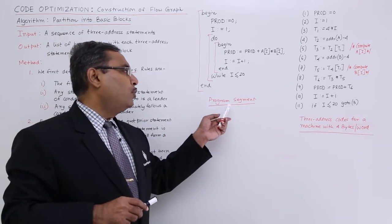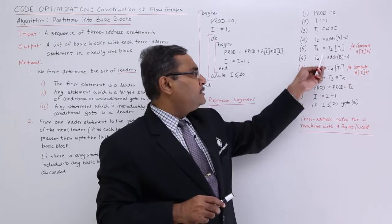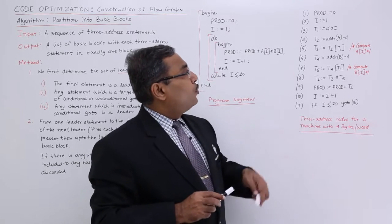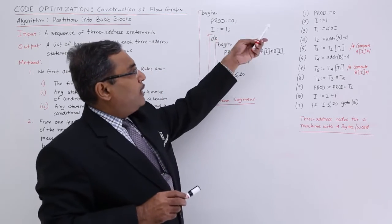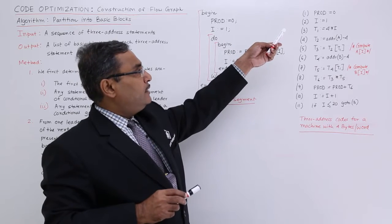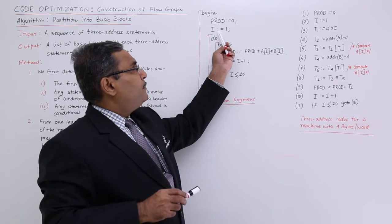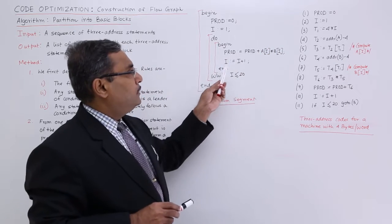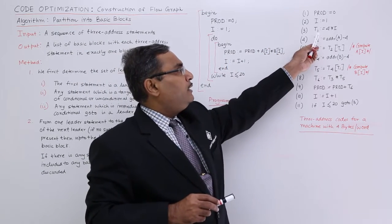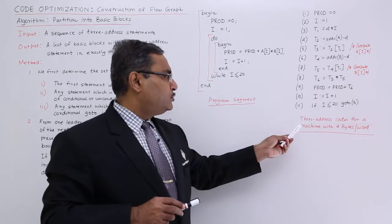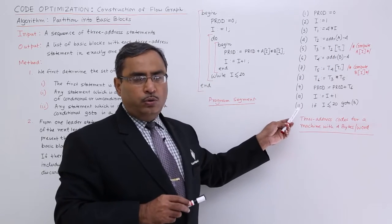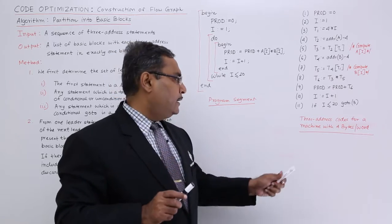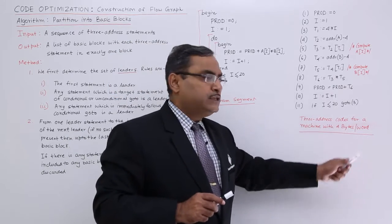This is a very simple sample program segment. Now, the respective three-address code has been written. Product is equal to 0, and i is equal to 1 — these are written as three-address statements. Then t1 equals 4 times i. Note that the machine on which this three-address code executes supports 4 bytes per word.